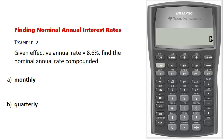Now we'll look at finding nominal annual interest rates given an effective rate. In this example, given an effective rate of 8.6%, we want to find the nominal rate compounded monthly, and then compounded quarterly.